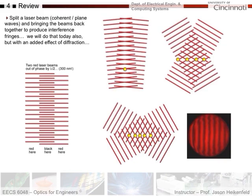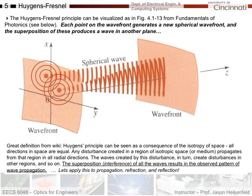We also talked about splitting a laser beam into two different beams and getting interference, where you could start to see fringes with destructive interference. That brings us to our project today. Let's start off not talking about diffraction directly, but about how light propagates forward — you'll see how this builds up into the rest of the lecture. This is the Huygens-Fresnel Principle; 'Huygens' is the right way to pronounce it, and it's not easily said.